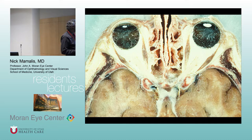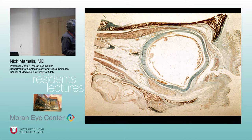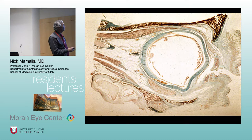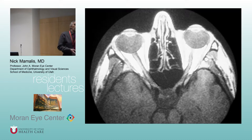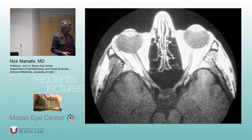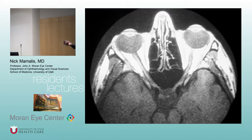Looking at the orbit in a more sagittal view, you can see bone, lids, muscle, and then in the intraconal space the optic nerve, lots of vessels, and then in the extraconal space not much exciting going on. A scan shows the relationship of the sinuses adjacent to the orbit. A lot of diseases affecting the sinuses — infectious, inflammatory, and neoplastic — can spill over into the orbit, so you always want to keep that in mind.